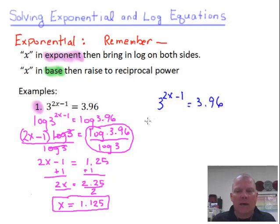And we rewrote that in logarithmic form. And if you remember, we wrote it as log base 3, this base here, of 3.96 equals whatever was in that exponent, which is 2x minus 1.